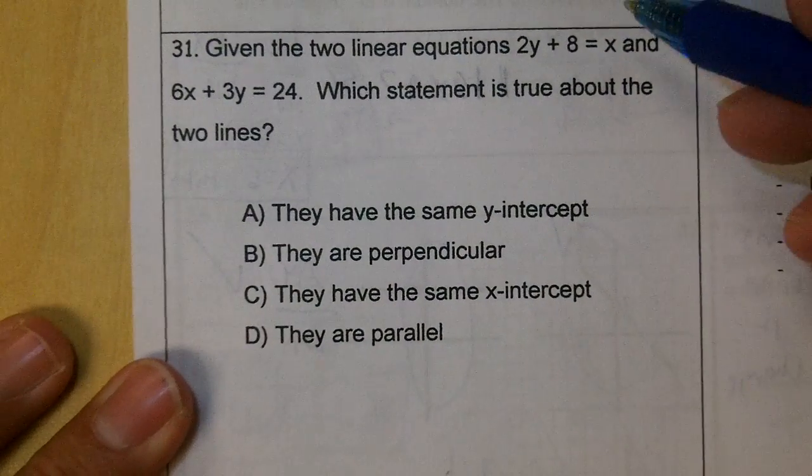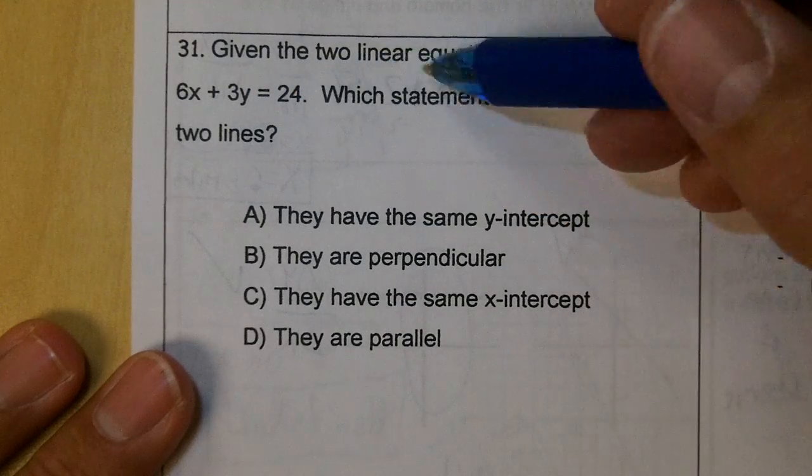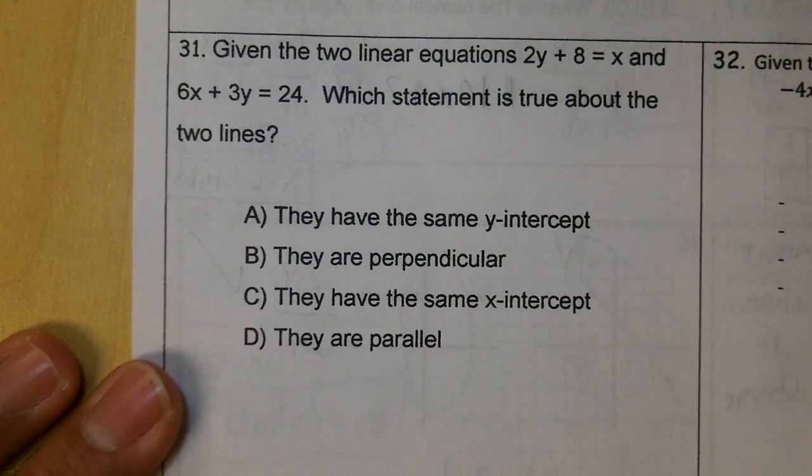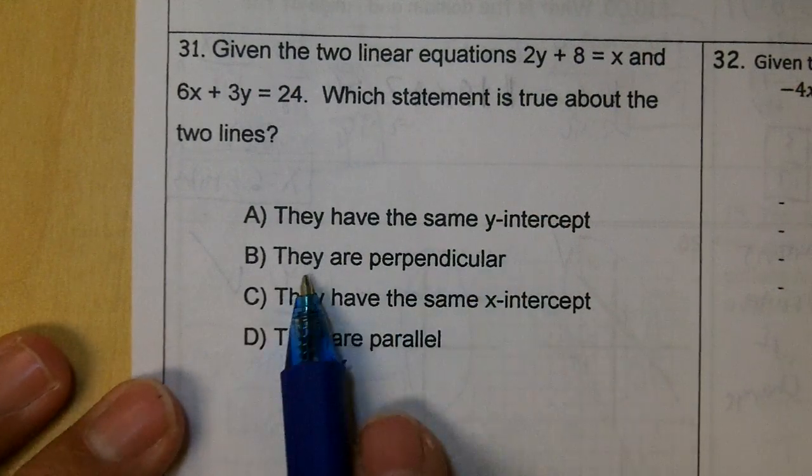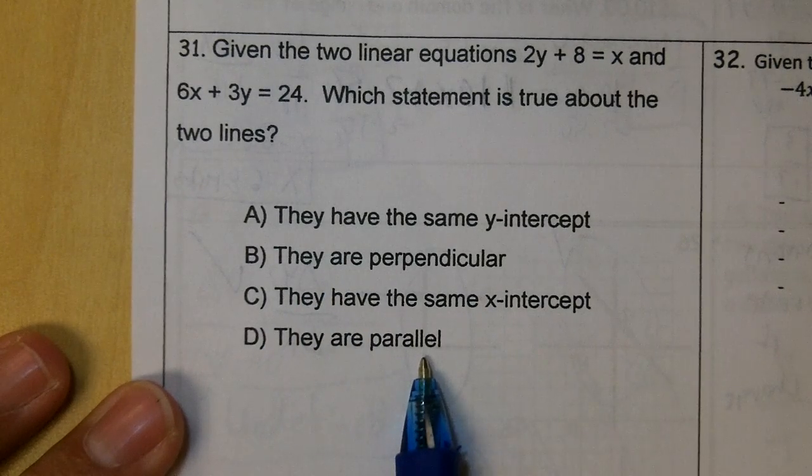Okay, given two linear equations: 2y plus 8 equals x, and 6x plus 3y equals 24, which statement is true about the two lines? They have the same y-intercept, they're perpendicular, they have the same x-intercept, they are parallel.